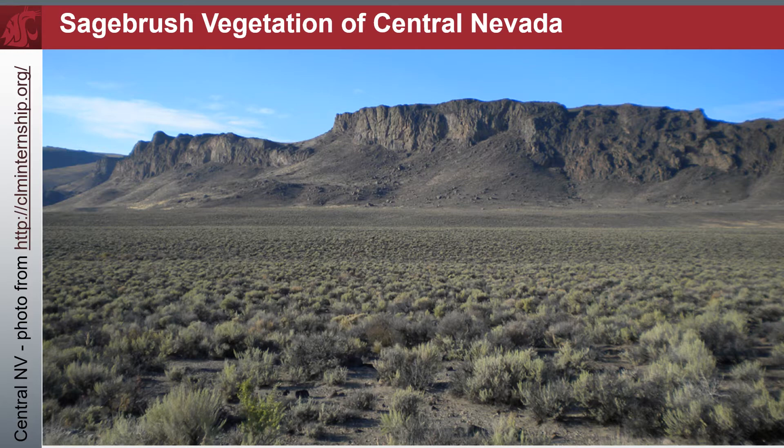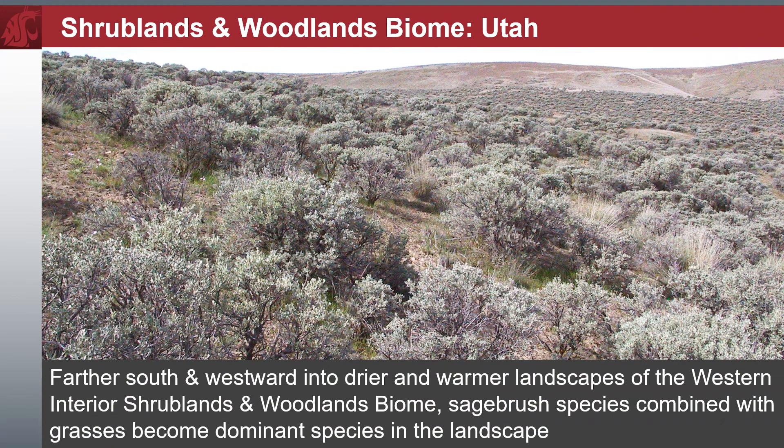We travel farther south and westerly into drier and warmer landscapes of the western interior shrublands and woodlands biome. Sagebrush species combined with grasses become dominant species in this landscape. These Utah plant communities are all competing for nutrients dissolved in precipitation at temperatures plants can capture. This is a repeating theme across this broad biome.